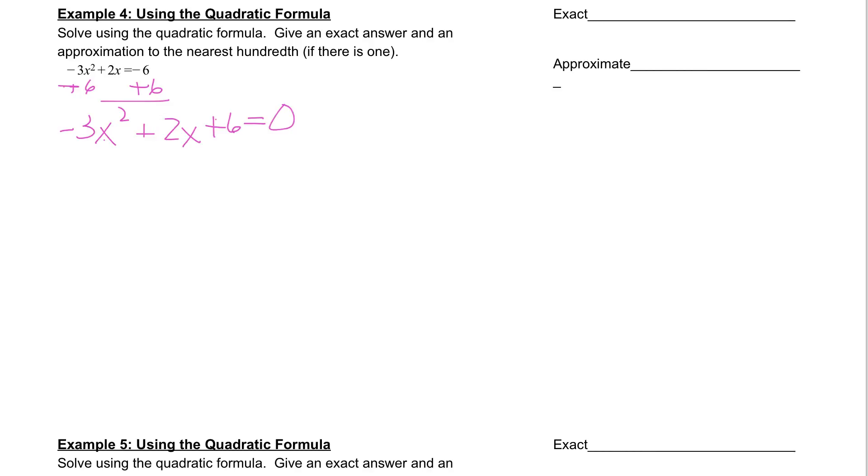Next we'll label our a, b, and c. a is always the number in front of our x squared, which is negative 3. b is always our number in front of x, so b is 2. c is always our constant, c in this case is 6.